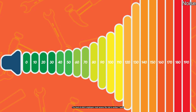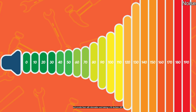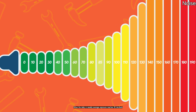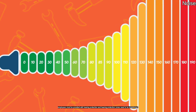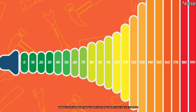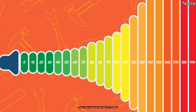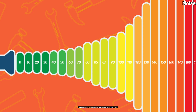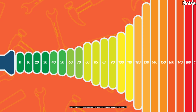The level at which employers must assess the risk to workers' health and provide them with information and training is 80 decibels. When the daily or weekly average exposure reaches 85 decibels, employees must be provided with hearing protection and hearing protection zones need to be established. There is also an exposure limit value of 87 decibels, taking account of any reduction in exposure provided by hearing protection.